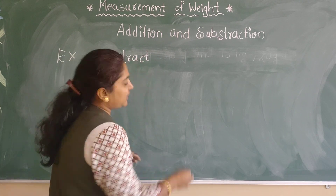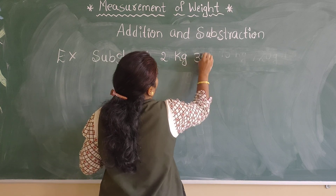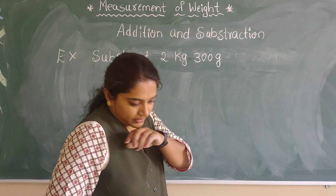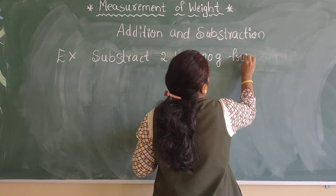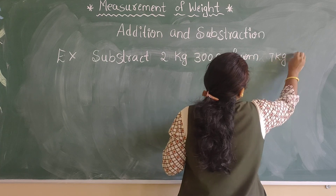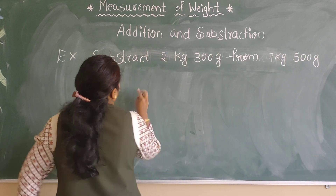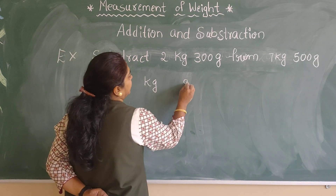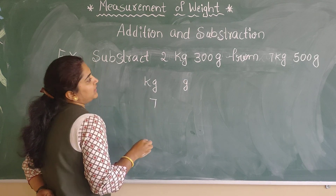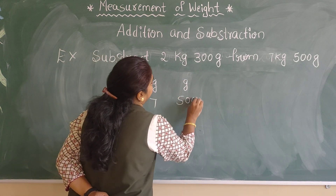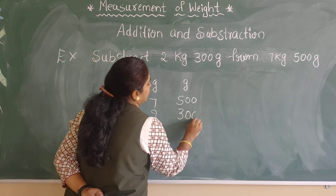Subtract 2 kg 300 gram from 7 kg 500 gram. I will set up two columns with kg and gram. Below the kg column I will write 7 kg 500 gram on top, and 2 kg 300 gram below, and I will subtract.